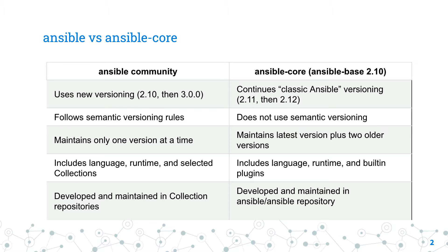Minor releases include new backward compatible features, modules and plugins, as well as bug fixes. Starting with version 2.10, the Ansible Community Team guarantees maintenance for only one major community package release at a time. For example, when Ansible 5.2 gets released, the team will stop making new 4.x releases. Community members may maintain older versions if desired.